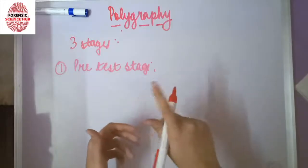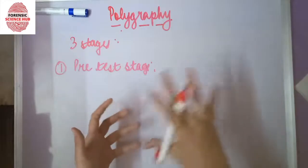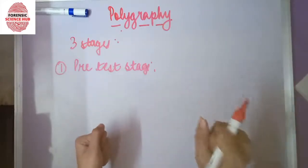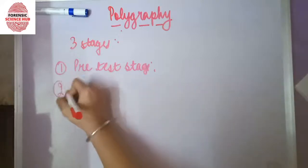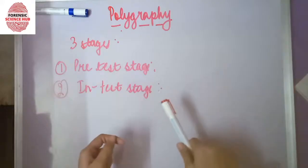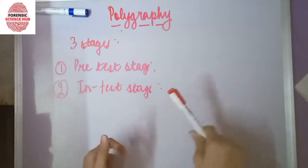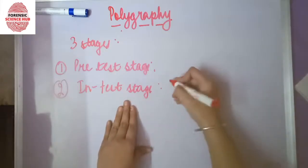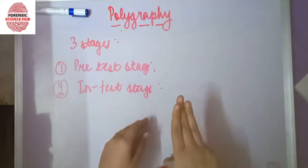Before moving on to the second stage, the in-test stage, the examiner puts certain painless components around the person's body. There are three basic components that are attached.